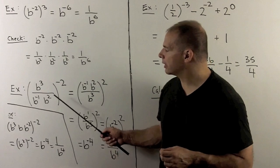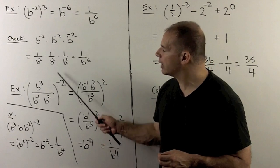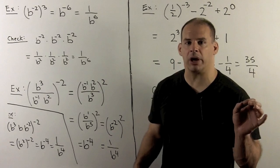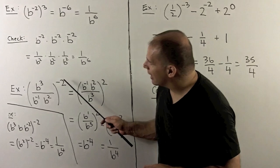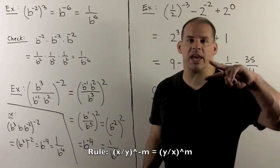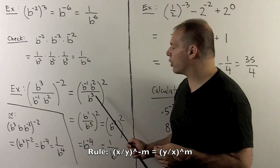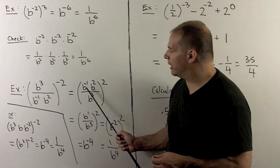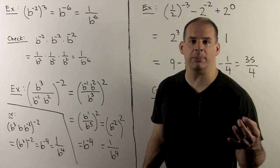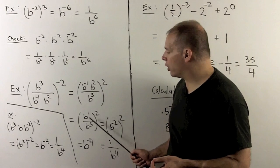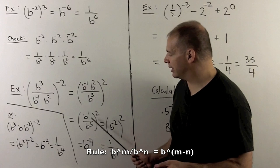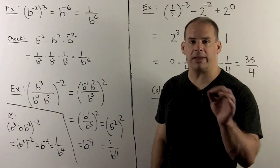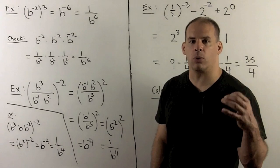For a slightly more complicated example, consider b cubed over b to the minus 1 times b squared, the whole quantity raised to the minus 2. We'll do this two ways. First, the fast approach: the minus sign in the outer exponent on a fraction says to flip it, giving b to the minus 1 times b squared over b cubed. Cleaning up inside: b to the minus 1 times b squared gives b to the 1, which is just b. So we have b over b cubed. The quotient rule gives b to the minus 2. Raised to the second power, we multiply exponents and get b to the minus 4, or 1 over b to the 4th.